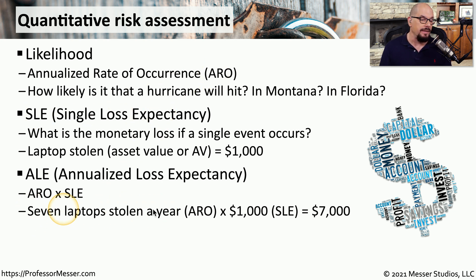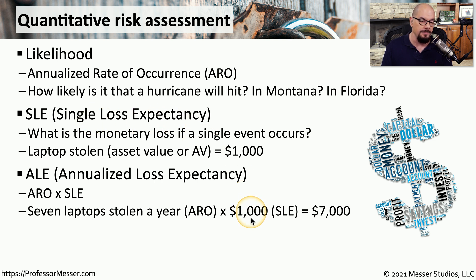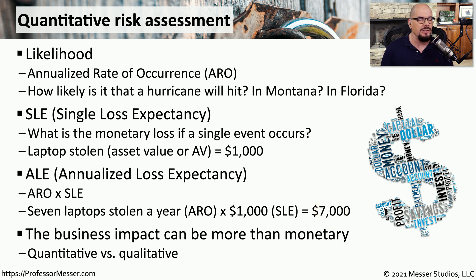Let's say that seven laptops are stolen in a single year — that would be our annualized rate of occurrence. We multiply that by the single loss expectancy of $1,000 per laptop, which means our total annualized loss expectancy would be $7,000. We can now make business decisions on whether we want to add additional security controls around the protection of these laptops, or we may decide to accept that particular risk.